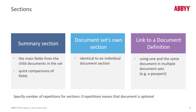Just like document definitions can have multiple sections, so can document sets — such as the summary section, the document set's own section, as well as a link to a document definition. Instead of directly including a document definition in a document set, you can link to a document definition, and if you do that, the same document definition can be used in more than one document set. Once we have these document sections, we can specify the number of repetitions allowed for a given section.